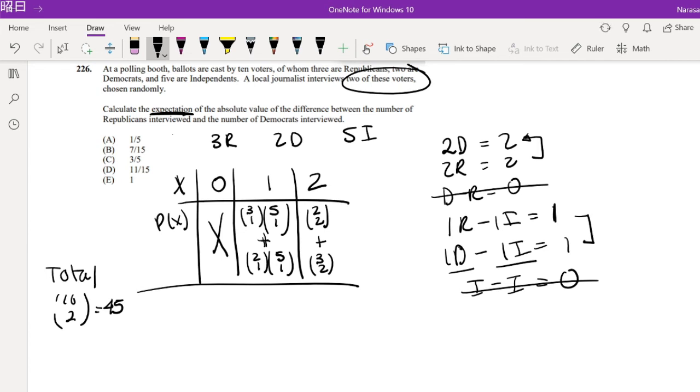So I'm just going to solve it out for you real quick. Three choose one is just three. Five choose one is just five. And the total probability is 45. Plus two choose one is two times five choose one is five over 45. So this right here is equal to 15 plus 10, 25 over 45. And then right here, two choose two is just one. So that's one over 45 plus three choose two is just three. Three out of 45. So this is equal to four out of 45.